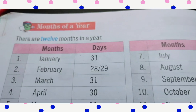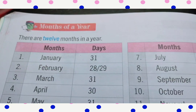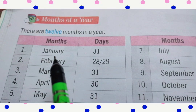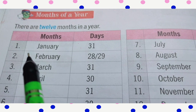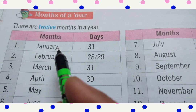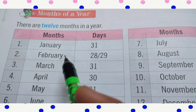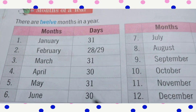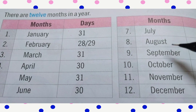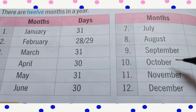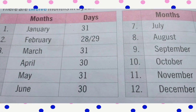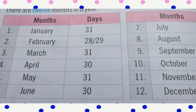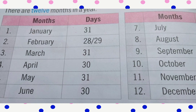There are 12 months in a year. The months are: January, February, March, April, May, June, July, August, September, October, November, December. These are the 12 months of the year.